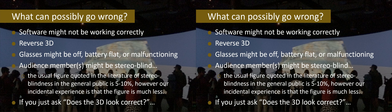It might also be the situation that some audience members don't see stereo — they might be stereo blind. The usual figure quoted in the literature for stereo blindness is 5 to 10%. Our incidental experience suggests that figure is probably much less, though we haven't done formal studies. If we're giving a demonstration without a test procedure, it just doesn't work to ask them, 'does the 3D look correct?' They'll say, 'yeah, I think so,' and who knows? The use of a random dot stereogram allows us to answer that question very definitively.